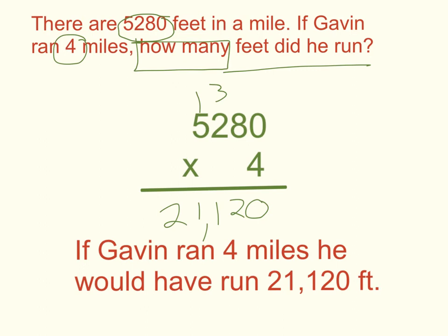Finally, don't forget to restate your question with the answer labeled. So if Gavin ran 4 miles, he would have run 21,120 feet.